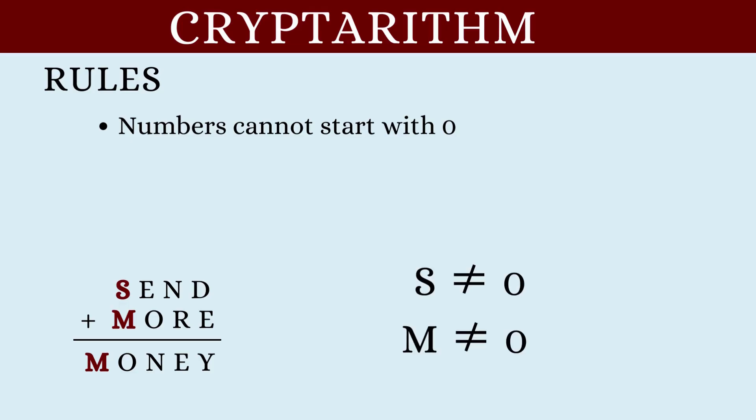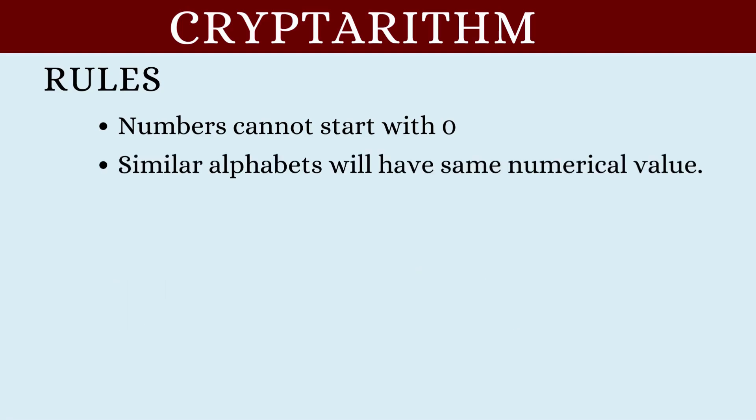Next rule. In any given puzzle, similar alphabets will have the exact same numerical value. For example, let's say we have this cryptarithm. Here, the S in Sun and the S in Swim should have the exact same numerical value.